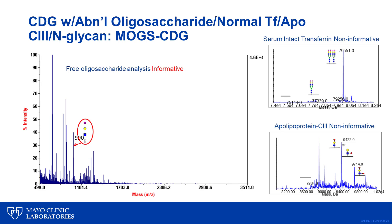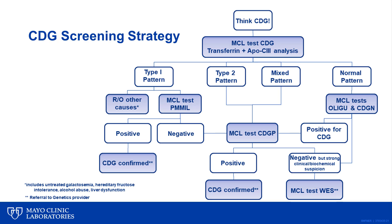And finally, to complete the description of possible abnormalities, here we have an informative urine oligosaccharide analysis in the setting of normal blood screening for CDG, as represented by MOGS CDG. The abnormality seen has a mass-to-charge ratio of 990, and its accumulation in the patient's urine indicates a glycosylation defect, specifically defective biosynthesis of N-linked oligosaccharides due to a glucosidase 1 deficiency.